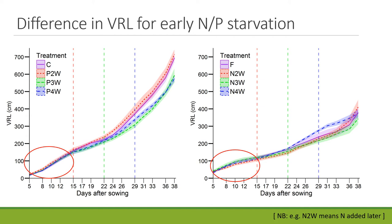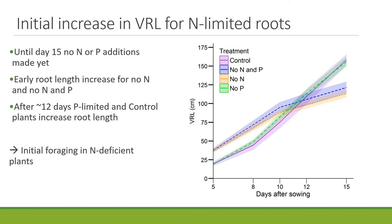Looking at the initial visible root length up to day 15, when plants received no nitrogen or no phosphorus in their specific treatments, we see a clear pattern. The no-nitrogen plants — and no-nitrogen-no-phosphorus plants — initially show an increase in visible root length, mostly from seminal roots. However, after around day 10, the control and phosphorus-lagging plants overtake them with a high increase in root length. This shows there is an initial response to nitrogen deficiency, but when plants are severely deficient their root length does not increase as much.